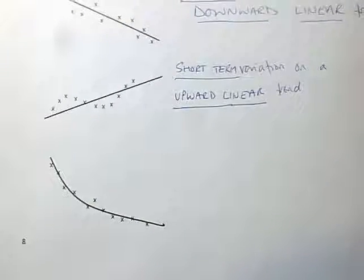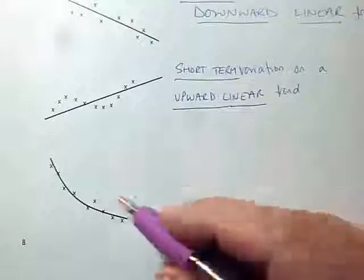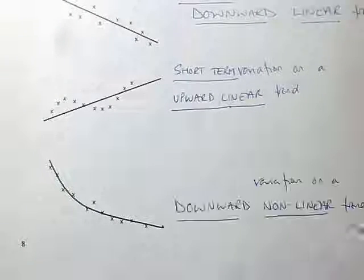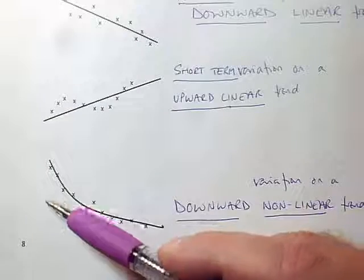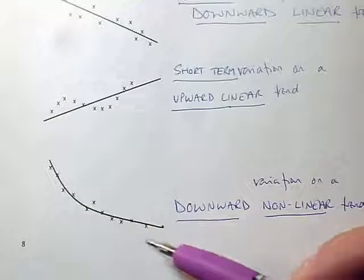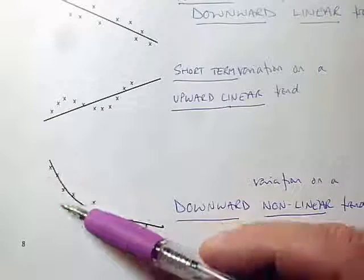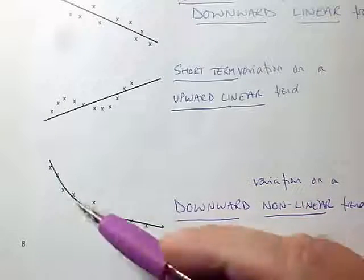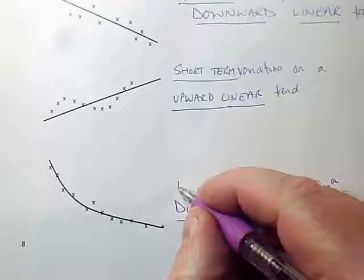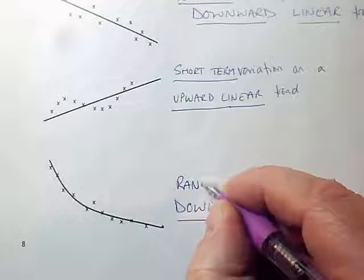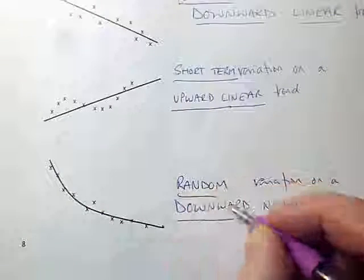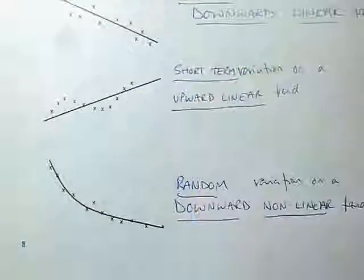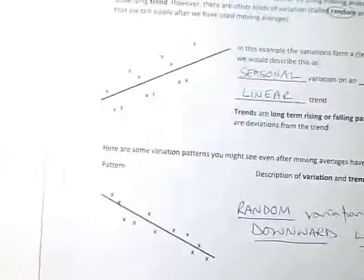Here we have a different kind of trend. This is not a linear trend, but this is a downward nonlinear trend. So we've got to describe the kind of variation. Well, it's not a regular pattern, so it's not seasonal. It's not a smooth pattern of crosses, gently going from one side for a bit and then the other side. It's just a scatter of crosses. So this is random variation again. So that's what random variation looks like. This is random variation, this is short term variation. And the one that is the regular pattern, which we can find out using moving averages, this is seasonal variation.